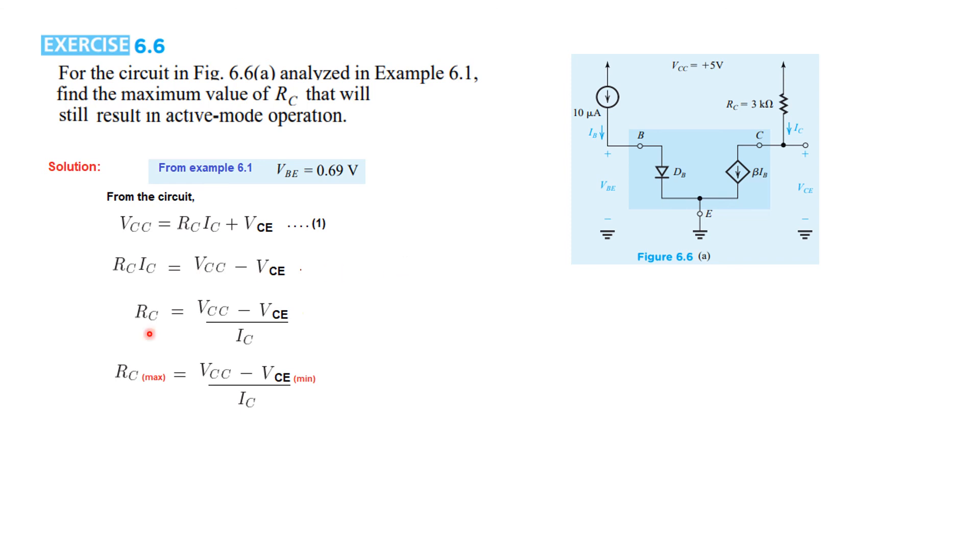From this formula you can see VCC is IC times RC and VCE, and from here we get RC to be VCC minus VCE over IC. Now RC maximum will be when VCE is minimum and still in active mode. So the last limit of VCE to be in active mode is 0.3 volt. So at the edge of active region VCE is 0.3 volt. Plugging in that value we find RC maximum to be 4.7 kilo ohm. I hope this gives you an understanding about the edge of active mode and edge of saturation mode.